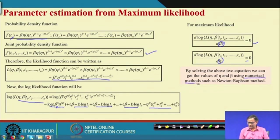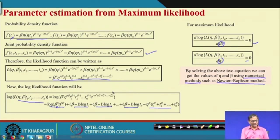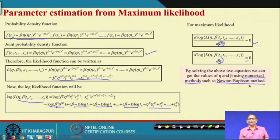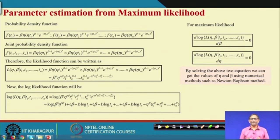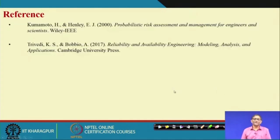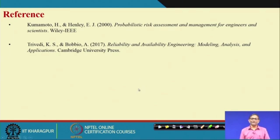You get two equations which cannot be directly solved, so numerical methods such as the Newton-Raphson method are required to find the parameters eta and beta. For the three-parameter model, similarly there will be three equations — one for each of the shape, scale, and location parameters — and again numerical methods like Newton-Raphson are used to find the most likely values for the parameters. I hope you have understood the concept. Thank you very much.